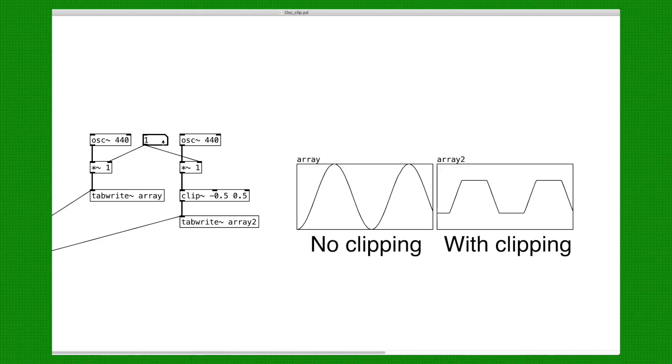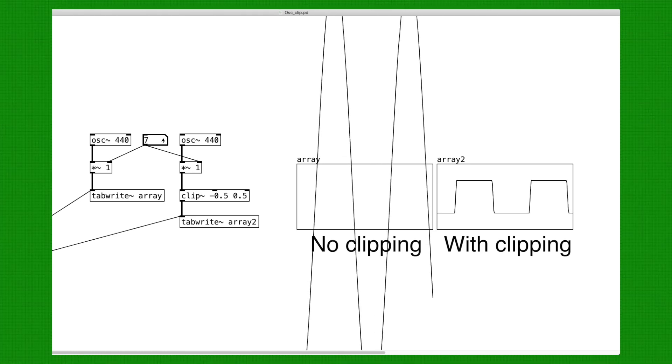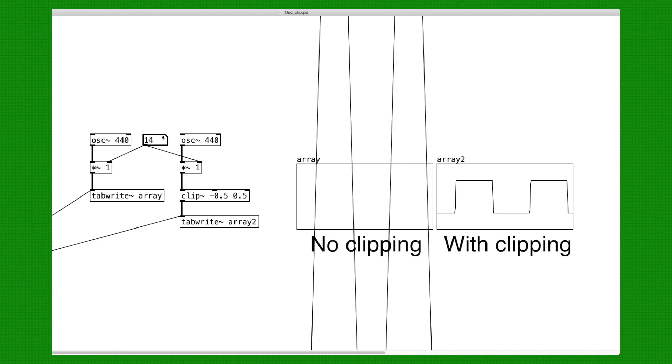What's cool about this object is that no matter how much we increase the gain of the oscillator, the output volume will not go beyond a certain loudness level because the signal is retained within 0.5. So we can use this to our advantage.